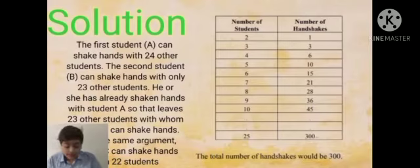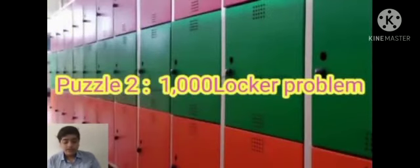Using the same argument, the third student can shake hands with 22 students. By using this pattern, at the end we will get the answer 300. So there were 300 handshakes at that class.